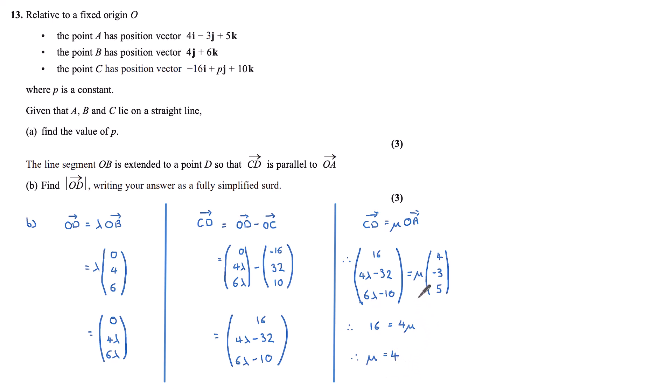Since mu is 4, I can substitute it in here. Rewriting this gives me (16, 4λ-32, 6λ-10) equals 4 times 4 is 16, 4 times -3 is -12, and 4 times 5 is 20.